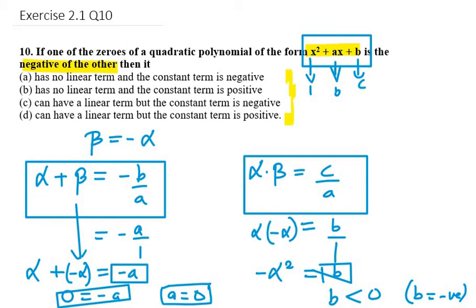So if b is negative we get the solution as f(x) equals x square plus 0x plus b negative. So I get x square minus b. This shows that it has no linear term. Therefore, the option right is the part that it has no linear term and the constant term is negative.